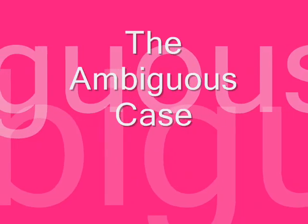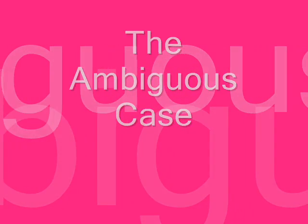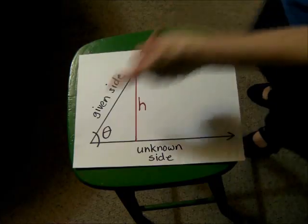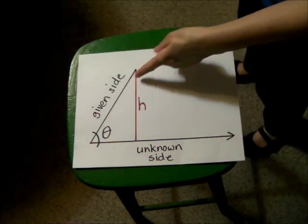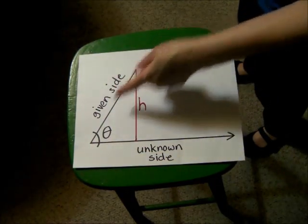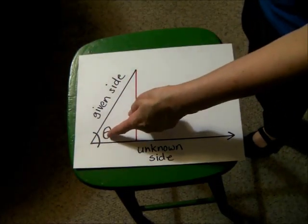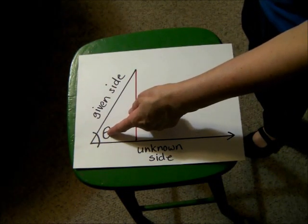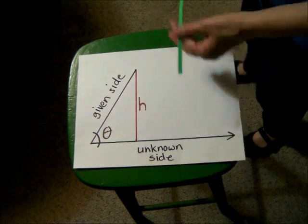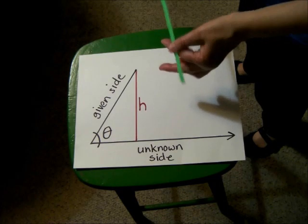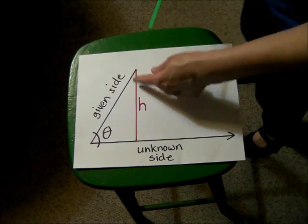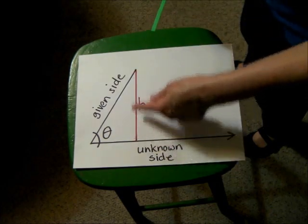The ambiguous case is when you're given a side and the angle adjacent to it, and the side opposite the angle. To see how that opposite side fits, we compare it to the height of the triangle.